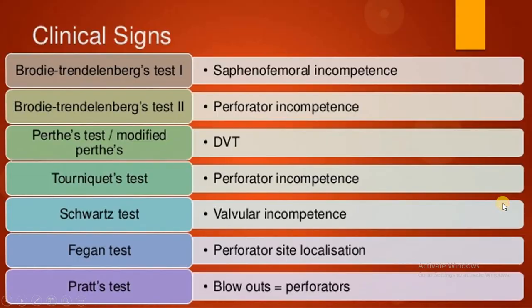Now we come to the main part of today's video — clinical signs. The clinical signs include: the Brodie-Trendelenburg test 1 and 2, Perthes test and modified Perthes test, tourniquet test, Schwartz test, Fegan's test, and Pratt's test. Let's see how we perform these tests.